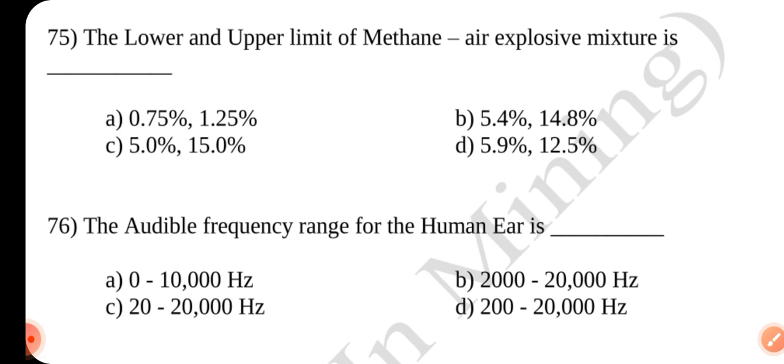Question number 75. The lower and upper limit of methane air explosive mixture is dash. Answer is B 5.4 percent, 14.8 percent.